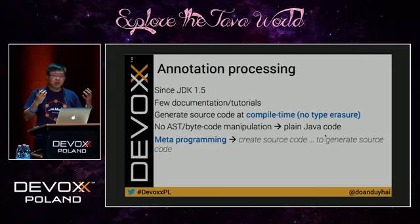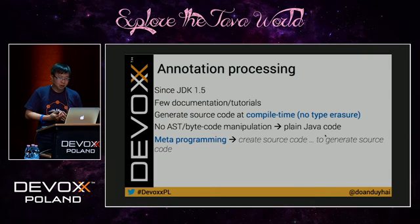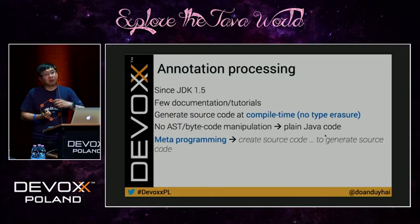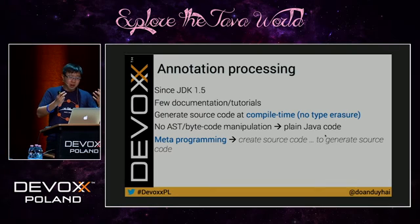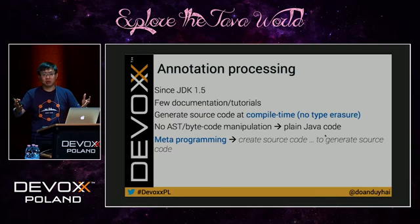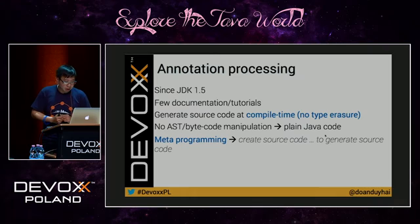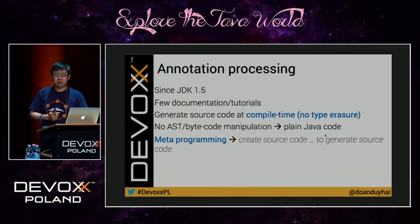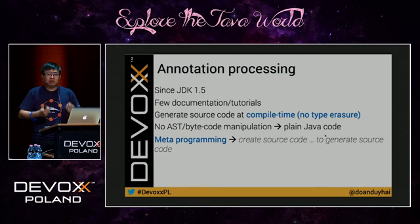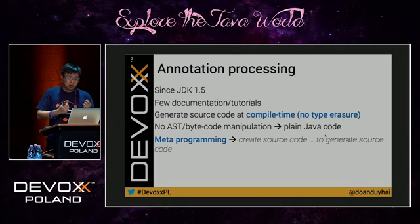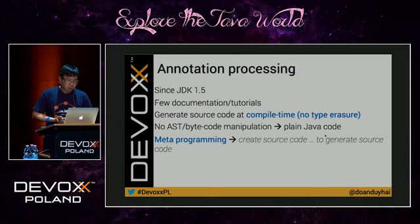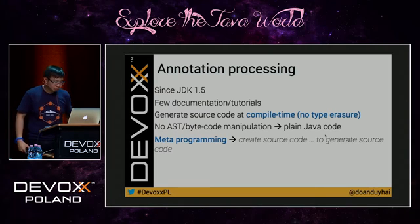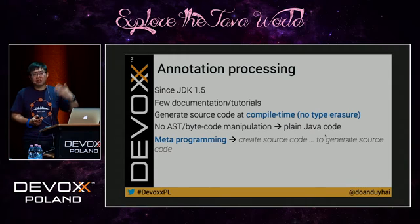Annotation processing is very old. It has been around since JDK 1.5. As I said, there is very little documentation. The idea is you can generate source code at compile time. And why is it so interesting? Because at compile time, with generics, you have all the type parameters, because there is no type erasure yet. And you don't need bytecode manipulation or AST (abstract syntax tree) manipulation. What you need to do is just write plain Java code, which makes annotation processing more interesting than bytecode manipulation. It is a kind of meta-programming — you are creating source code to generate more source code.